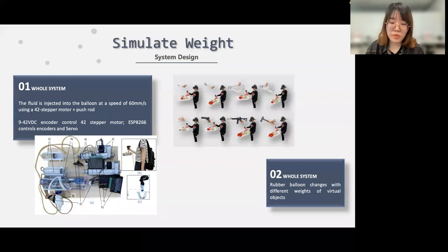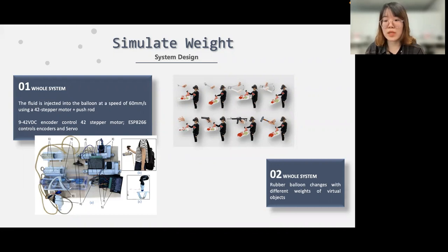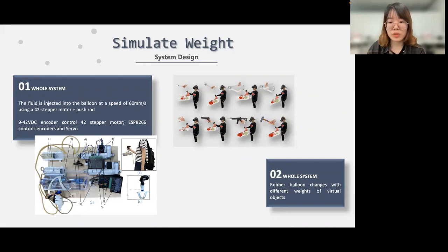So how did we perform the simulation? The hardware setup can be seen in this picture. When a user picks up a virtual object in a virtual environment, fluid is injected into the balloons at a speed of 30 millimeters per second using a 42-step motor and push load. The step motors were controlled by an encoder, and the encoder and steering gear were controlled by a microcontroller ESP8266. For different weight and center of gravity simulations, different volumes of liquid are injected into the balloon to simulate different virtual objects, as shown in the picture here.